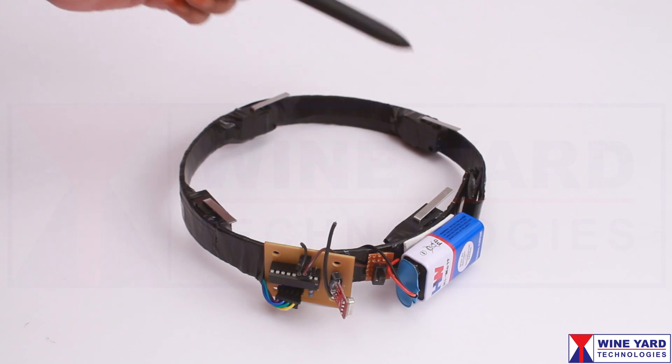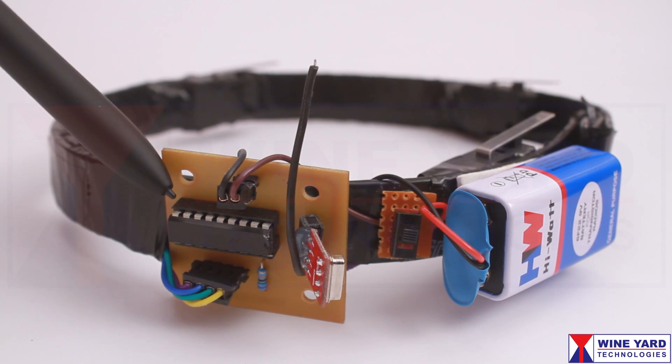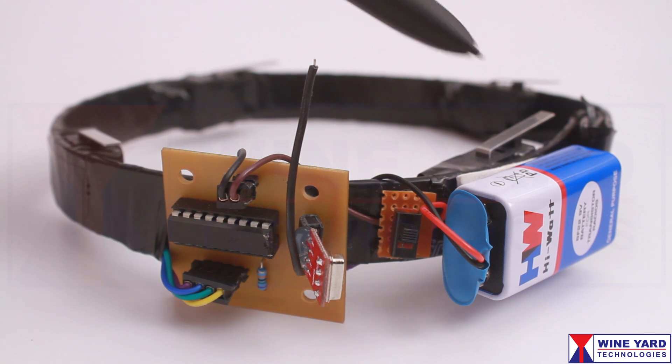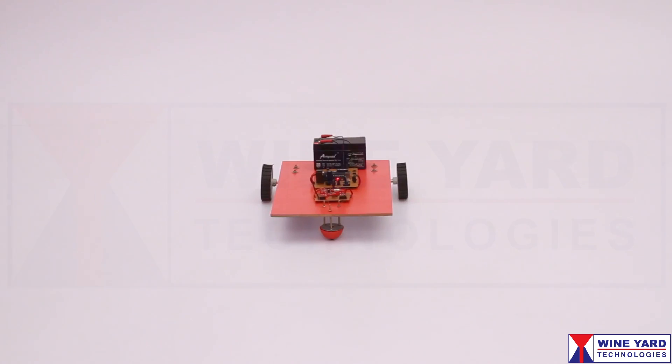These four end stop switches fitted here are connected to this RF transmitter. This is powered by a nine volt battery.